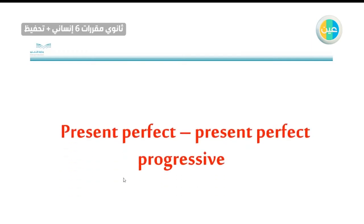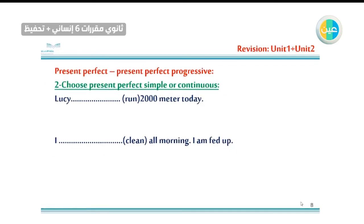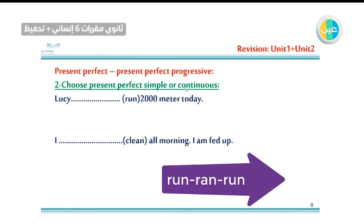Now let's move to another grammar rule: present perfect and present perfect progressive. Perfect tenses express actions that happened in the past but with no specific time. The difference: present perfect expresses the result of the action, while present perfect progressive expresses the duration of the action.